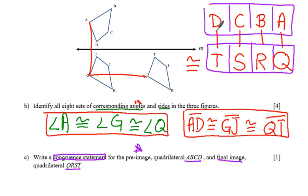Final summary. Quadrilateral DCBA is congruent to quadrilateral TSRQ, since we performed a sequence of rigid motions to map one onto the other.